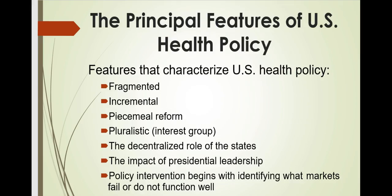Some features that characterize US health policy: first, it is fragmented, incremental, and piecemeal. Health policy is often fragmented due to lack of coordination between federal, state, and local governments. Policy making involves compromises against competing interests, making it incremental and piecemeal. Incremental policy may add new benefits to existing programs, such as adding a prescription drug benefit to Medicare. Piecemeal policy may create small new programs, such as CHIP.